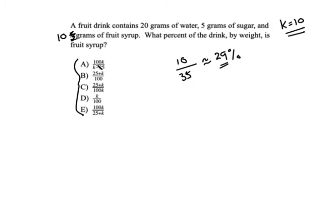If you use your calculator, you can plug it in here. 100 times 10, that's 1,000 over 10 minus 25. Oh, well, that's going to be a negative number. Comes out to about negative 67, so that's not right.